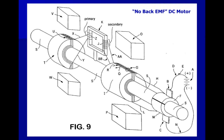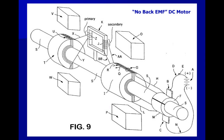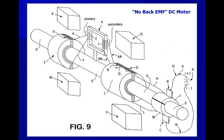Figure 9 shows a no back EMF motor configured according to the present invention. The arrangement of Figure 9 internally cancels out all or nearly all back EMF of the motor.